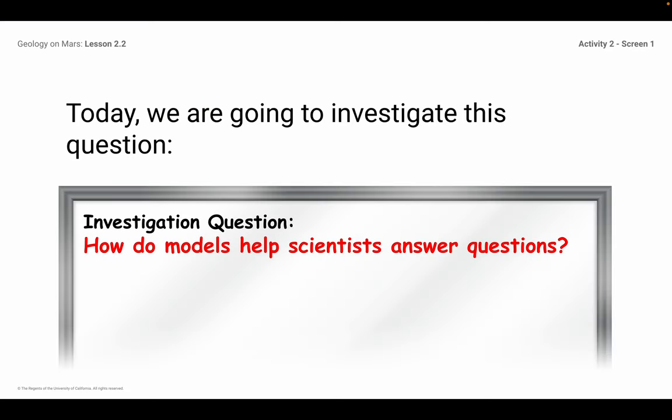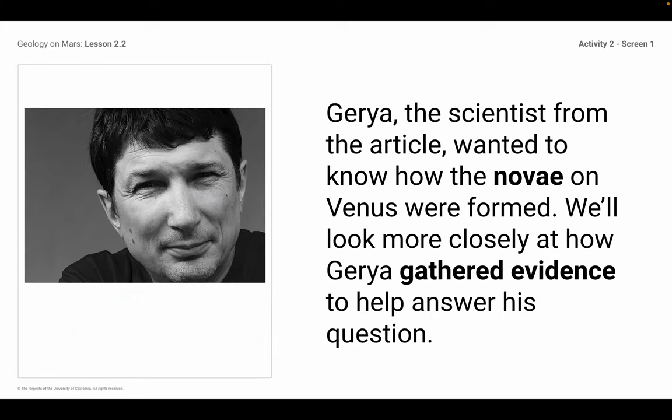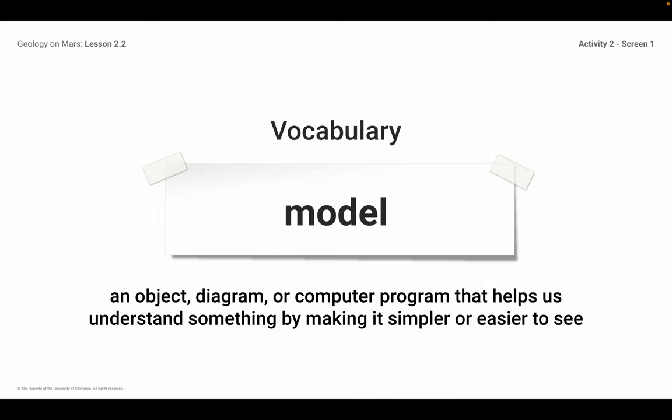We were going to take a look at the investigation question: how do models help scientists answer questions? We talked briefly about the article you read yesterday. Garia was the scientist from the article — he wanted to know how the novae on Venus were formed. So we're going to look more closely at how Garia gathered evidence to help answer his question.